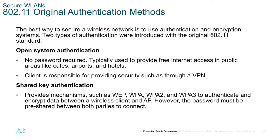Shared key authentication provides mechanisms such as WEP, WPA, WPA2, and WPA3 to authenticate and encrypt data between wireless client and access point. The password must be pre-shared between both parties. Nowadays, most authentication systems in small offices, cafes, and hotels use shared key authentication — when you go to a reception desk they give you the SSID name and the shared key to enter as a password.